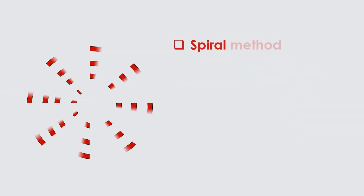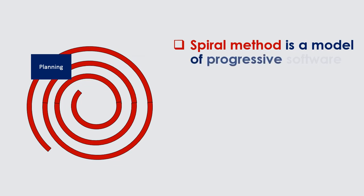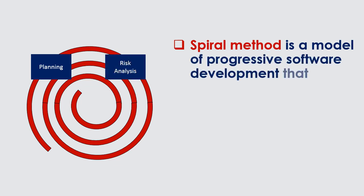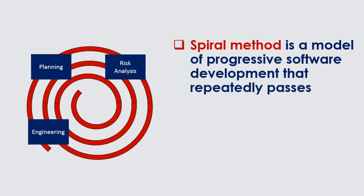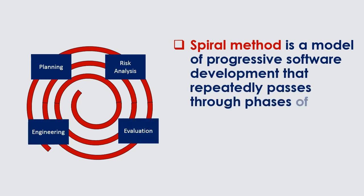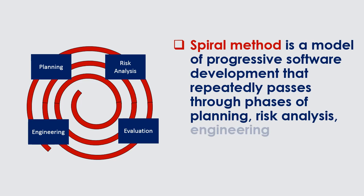Spiral Method is a model of progressive software development that repeatedly passes through phases of planning, risk analysis, engineering, and evaluation.